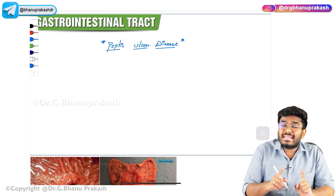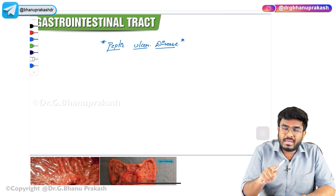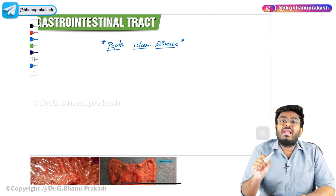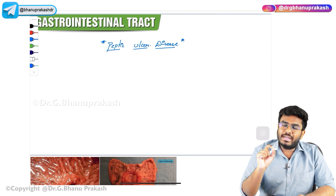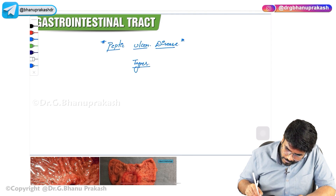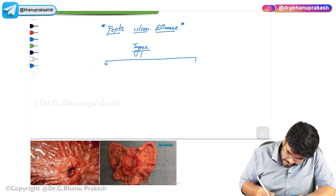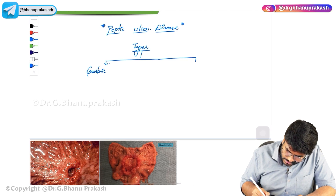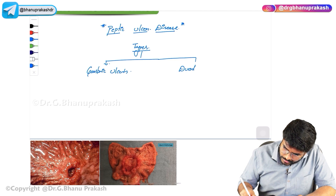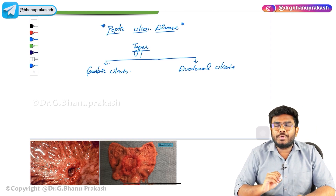Ulcers, because of the acidic damage, can occur in the stomach. Those ulcers which are occurring in the stomach are called gastric ulcers, and those ulcers that occur in the duodenum are called duodenal ulcers. So they are mainly of two types: gastric ulcers as well as duodenal ulcers.